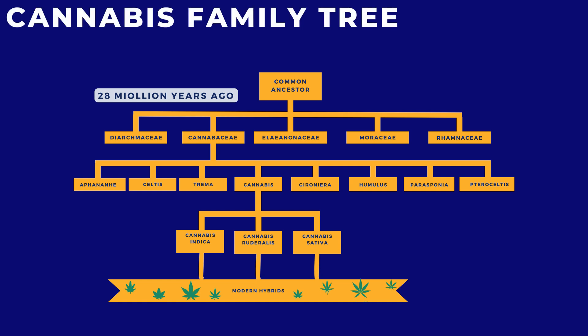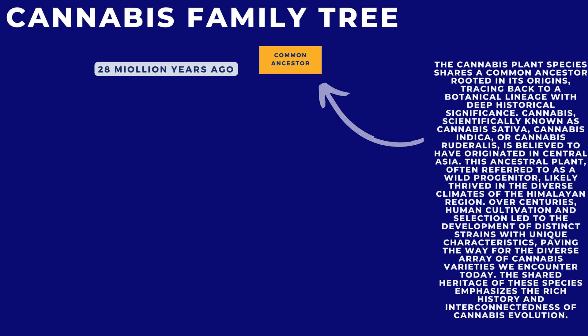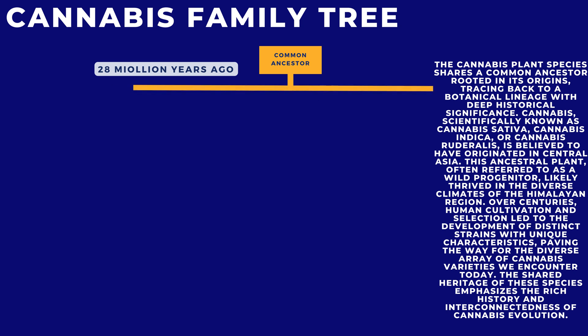Cannabis Family Tree. The cannabis plant species shares a common ancestor rooted in its origins, tracing back to a botanical lineage with deep historical significance. Cannabis, scientifically known as Cannabis sativa, Cannabis indica, or Cannabis ruderalis, is believed to have originated in Central Asia.